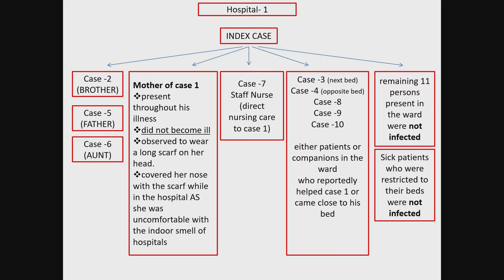The aunt had come very close to the index case's face the previous night before his death — reciting holy mantras. Just that one close contact infected her. The nurse gave injections, took BP, and attended him without any PPE, and that is how she acquired the infection. The patients on opposite and adjacent beds were very close contacts. What was interesting is that the remaining 11 patients in the same ward were not infected — those who were too sick to move did not get infected.